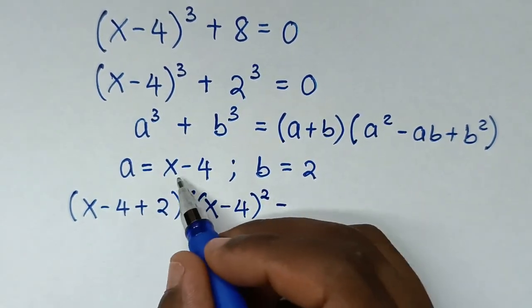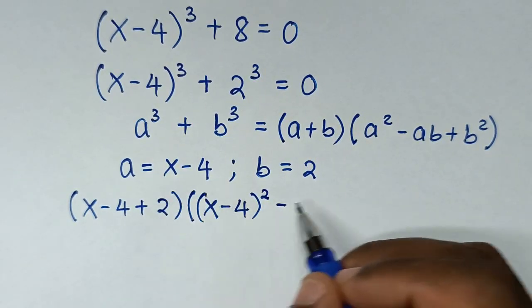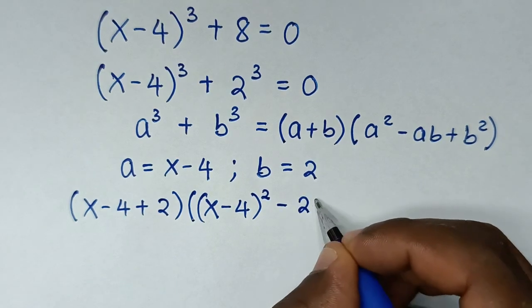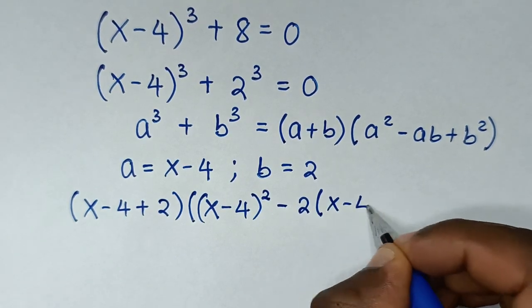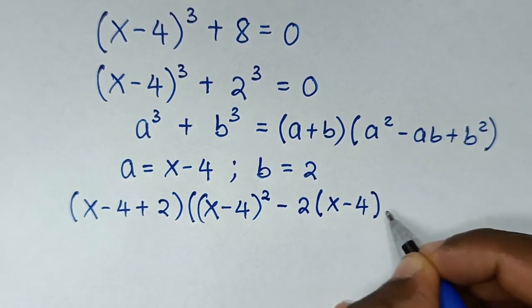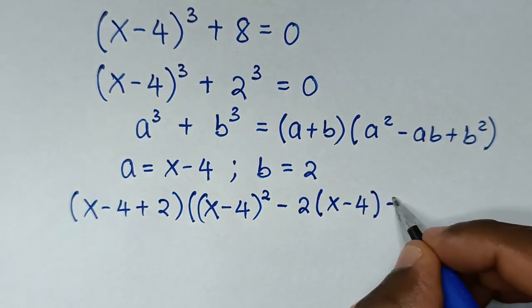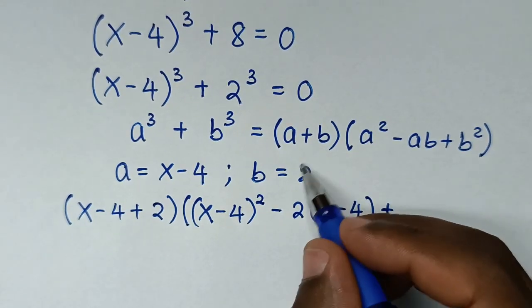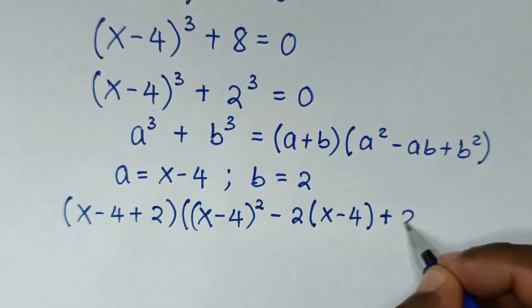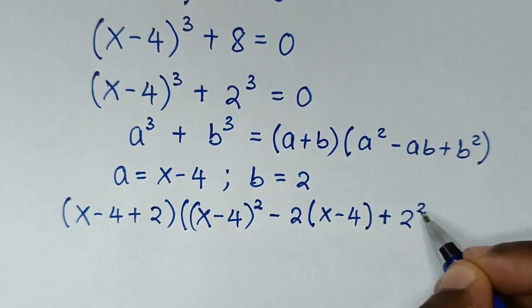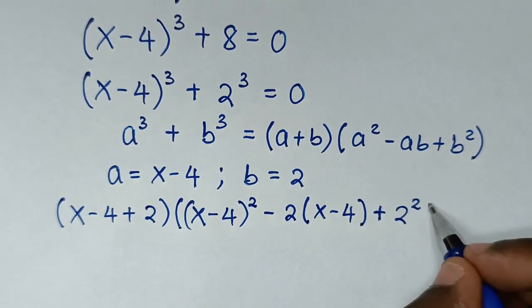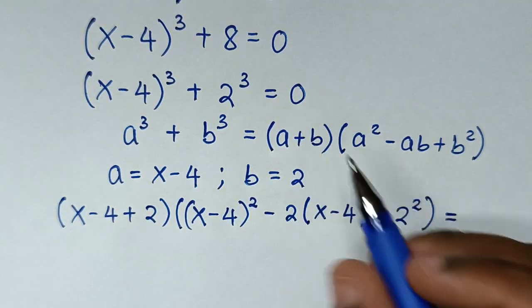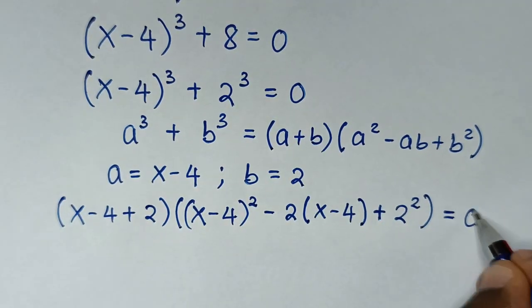Continuing the second factor: minus 2(x - 4), then plus b², which is 2² = 4. So the full expression is (x - 4 + 2)[(x - 4)² - 2(x - 4) + 4] = 0.